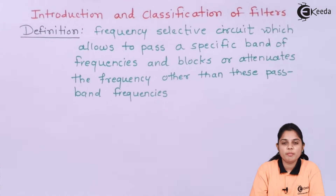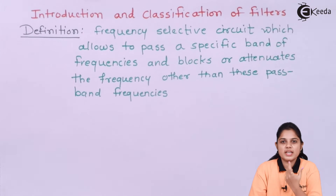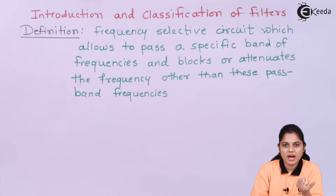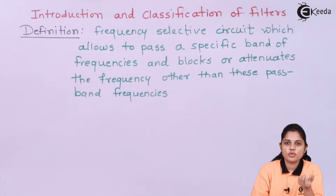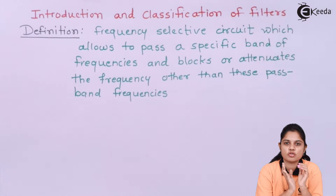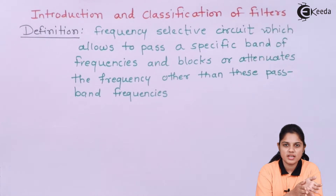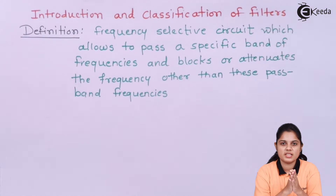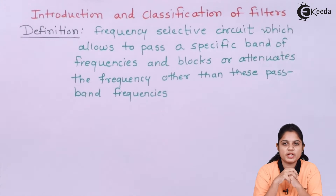Similarly, when it comes to signals, a signal can sometimes get distorted over some part of the frequency range. So you need to filter out that noise or distortion from the signal, while the main signal needs to pass through that particular device. This is the basic operation of a filter.